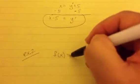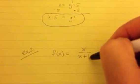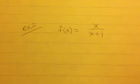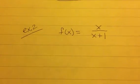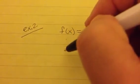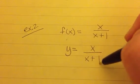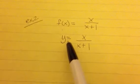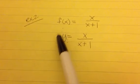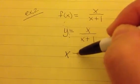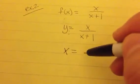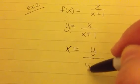Let's try example 2, something a bit more difficult involving a fraction. We have f of x equal to x over x plus 1. Fractions are nothing to fear — we do the same steps. Step 1: change f of x to y equals x over x plus 1. Step 2: switch all the x's and y positions, so x equals y over y plus 1.